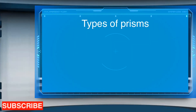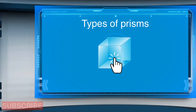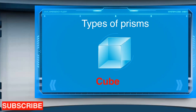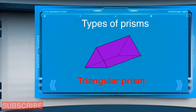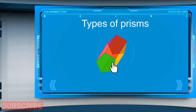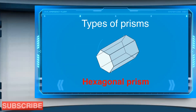Types of prisms: Cuboid, Cube, Triangular prism, Pentagonal prism, Hexagonal prism.